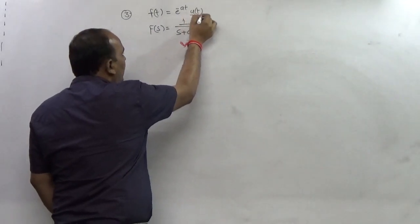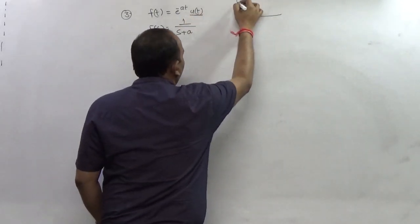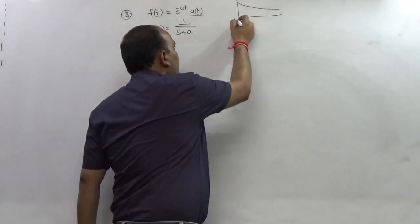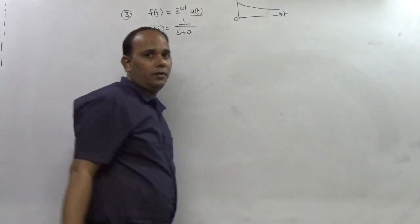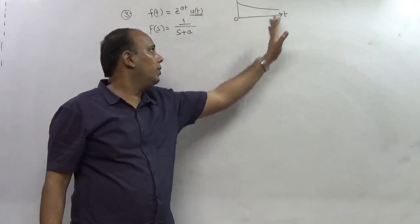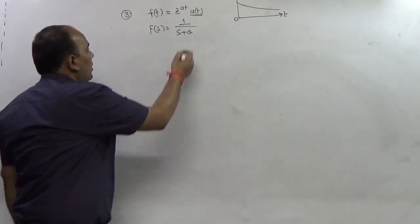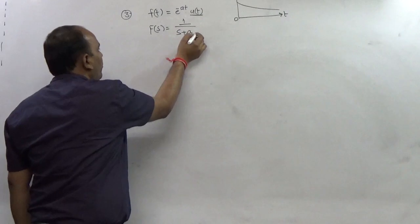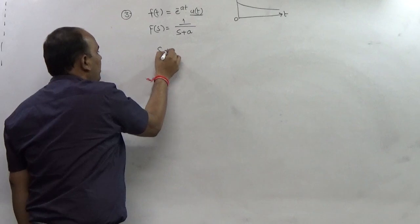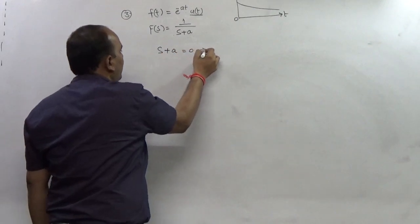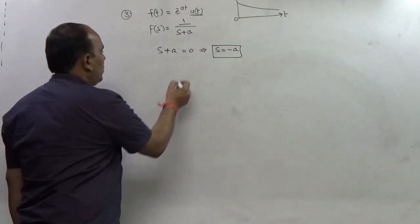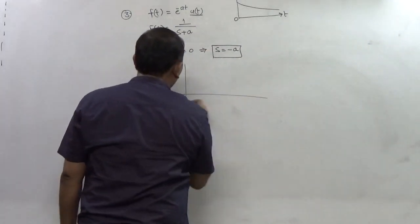When you analyze this function you realize it is a right-sided signal because it exists on the right side of zero. To find the pole, set the denominator equal to zero, which gives s = -a. So the pole is at s = -a, and I will draw the S-plane.